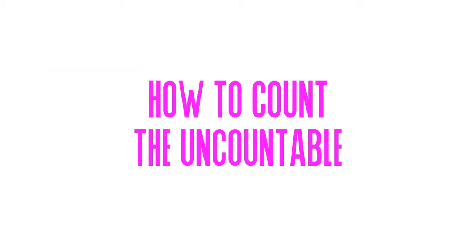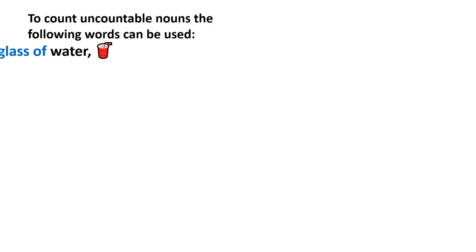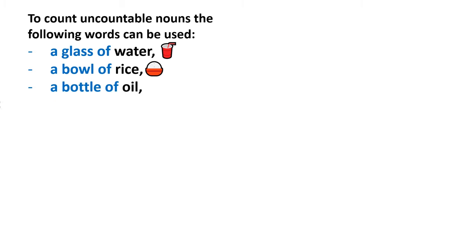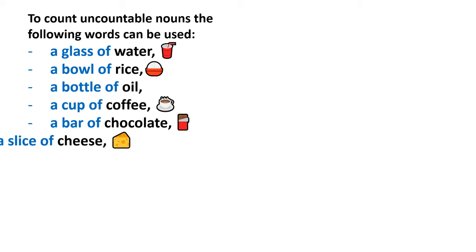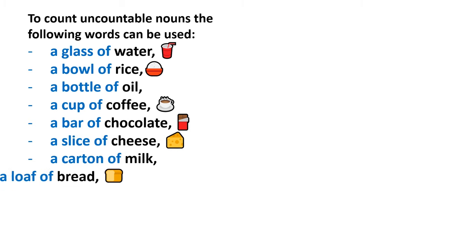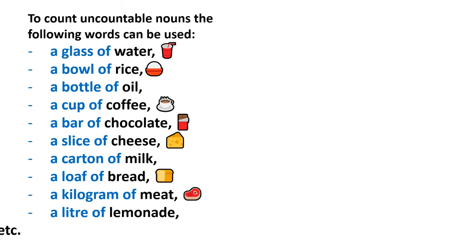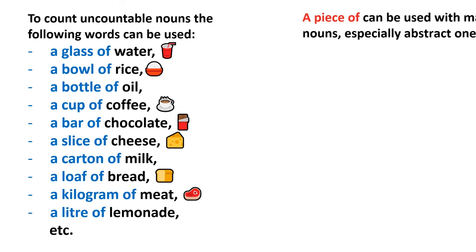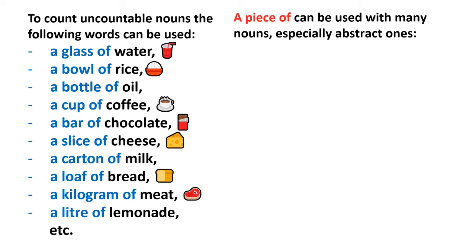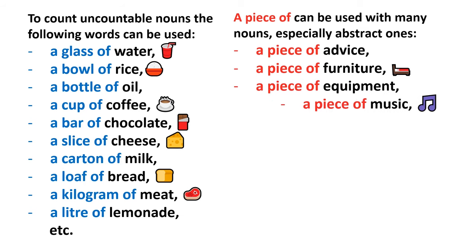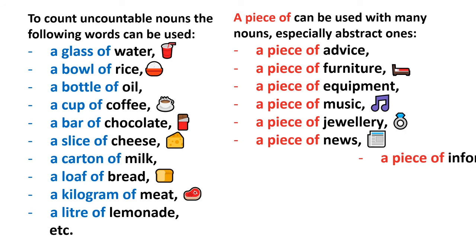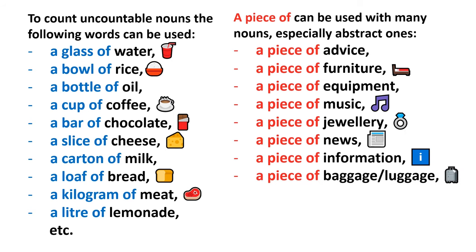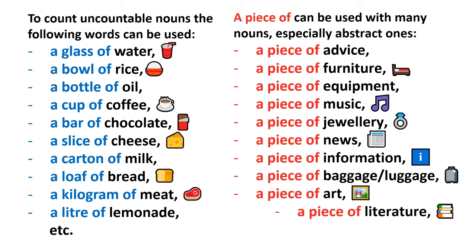And now for the final point: how to count uncountable things. There are a number of words that can help us do that, such as: a glass of water, a bowl of rice, a bottle of oil, a cup of coffee, a bar of chocolate, a slice of cheese, a carton of milk, a loaf of bread, a kilogram of meat, a liter of lemonade, etc. There is another phrase that will come in handy: 'a piece of.' This can help us count many abstract things: a piece of advice, a piece of furniture, a piece of equipment, a piece of music, a piece of jewelry, a piece of news, a piece of information, a piece of baggage or luggage, a piece of art, a piece of literature, a piece of work.